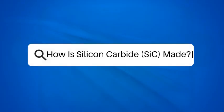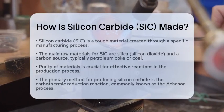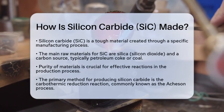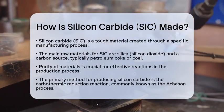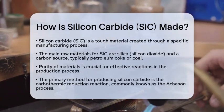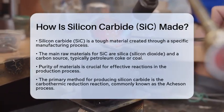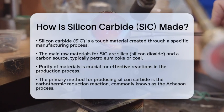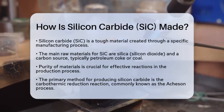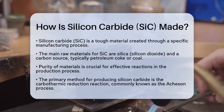Have you ever wondered how a material as tough as silicon carbide is created? This fascinating process combines chemistry and high temperatures to produce a ceramic that is both durable and versatile. Let's break down the steps involved in making silicon carbide, also known as SiC.